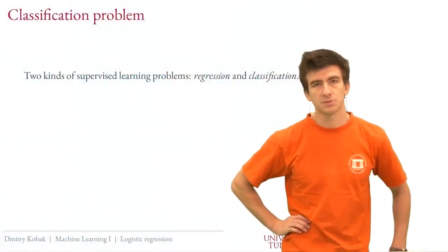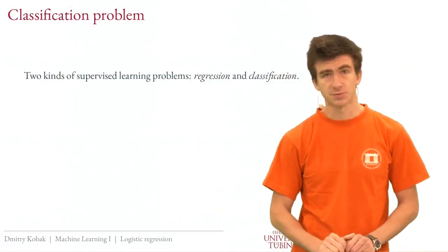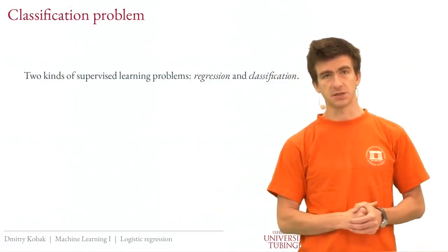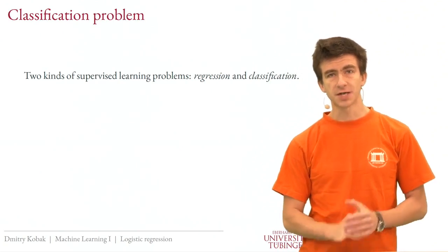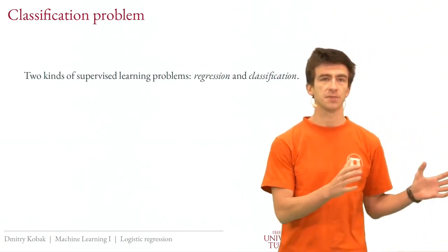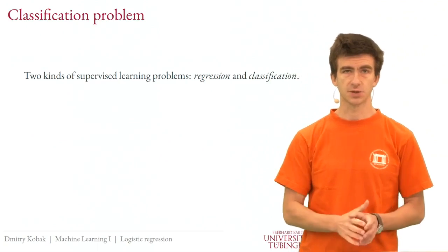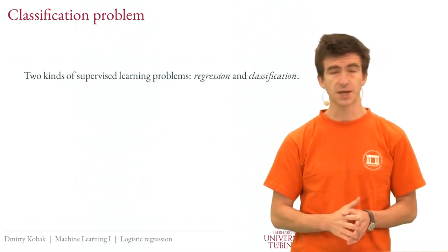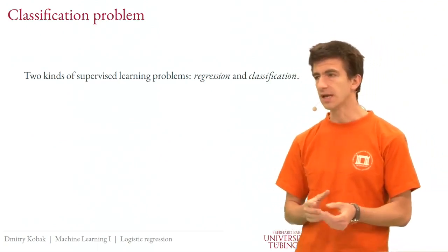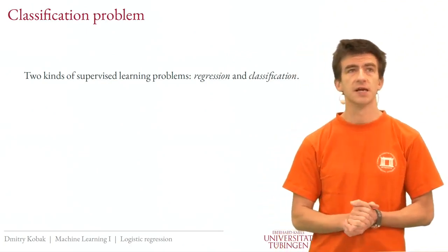Hello and welcome to lecture 5 of this introduction to machine learning class. The topic of today's lecture is logistic regression, which means that we switch from talking about regression — the topic of the initial four lectures — to classification. And this will be our topic for the next four lectures.